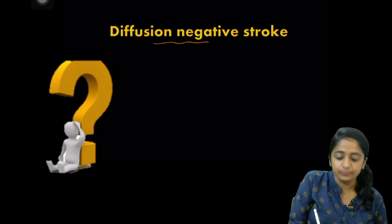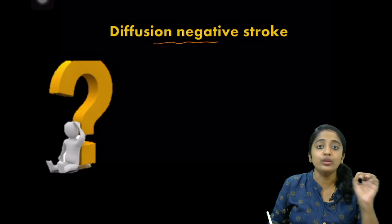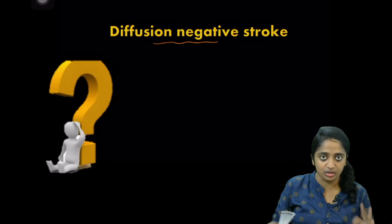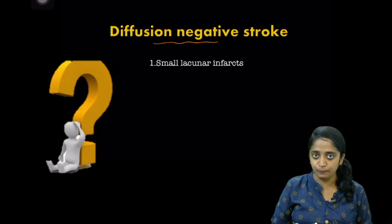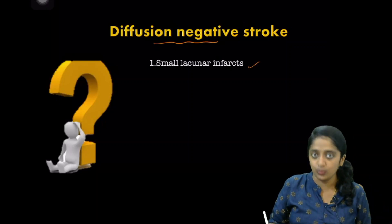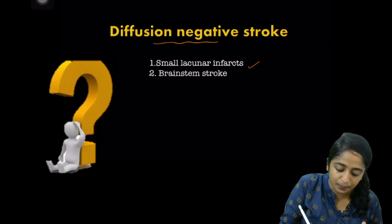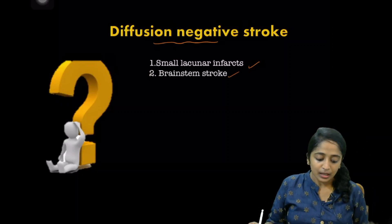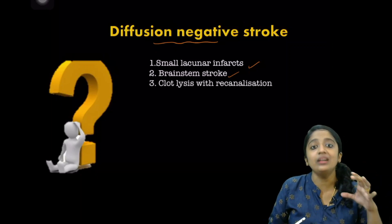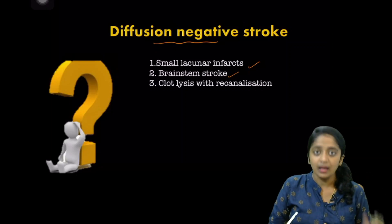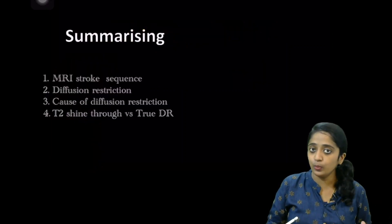There is also a concept called diffusion-negative stroke: even if there is ischemic stroke, there may be conditions in which you cannot pick it up on DWI. There are three important conditions: first, the presence of small lacunar infarcts due to occlusion of penetrating vessels; second, posterior circulation stroke, classically brainstem stroke; and third, if a thrombus has occluded the vessel but undergone early lysis due to thrombolysis, you will not detect diffusion restriction.